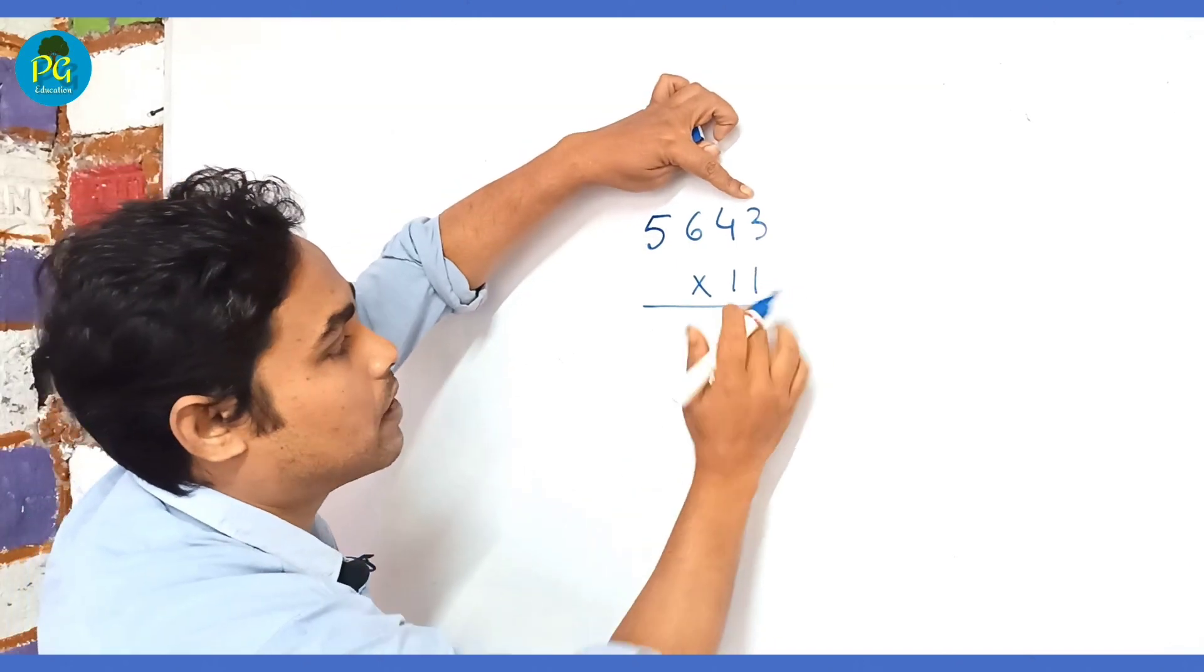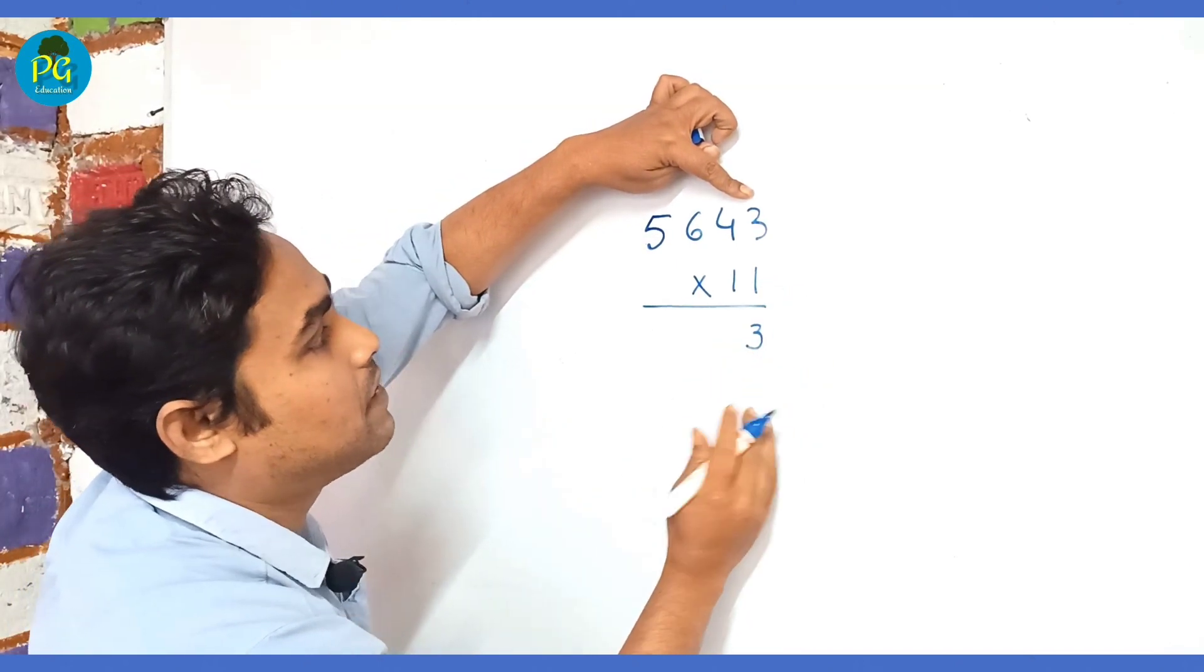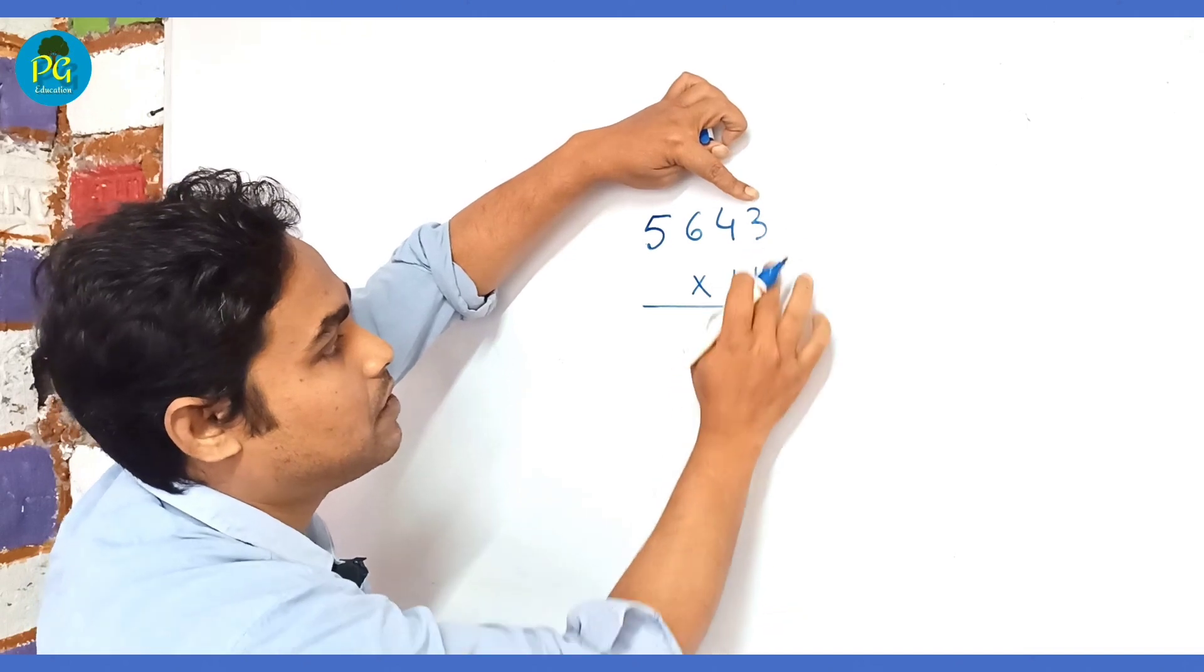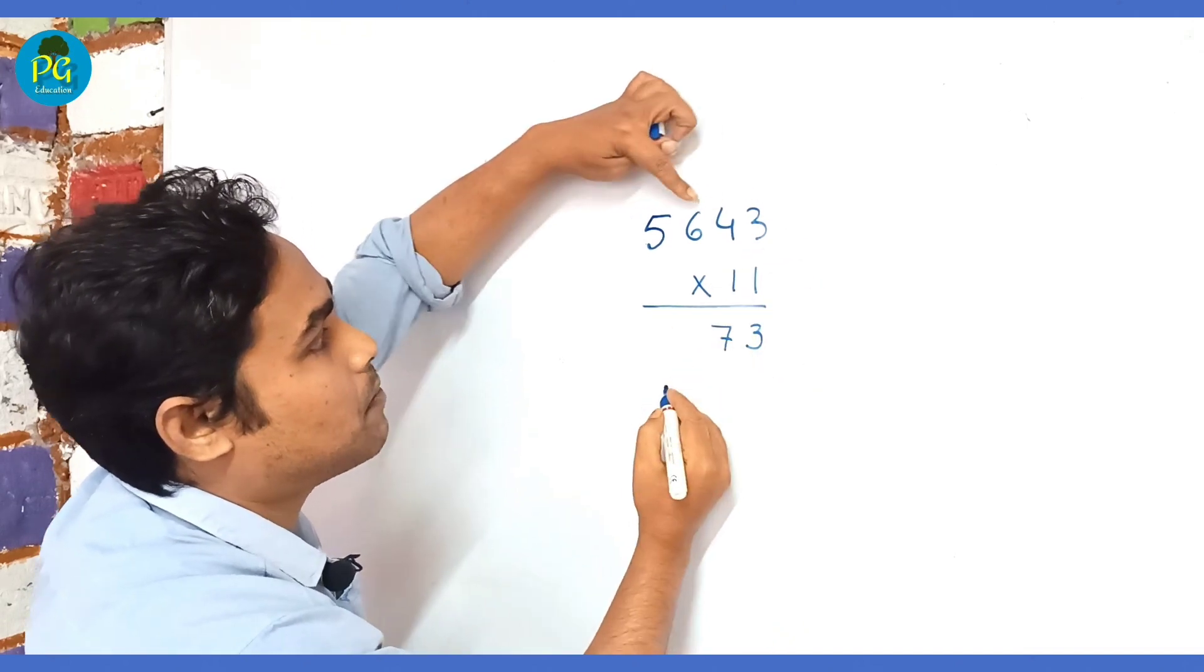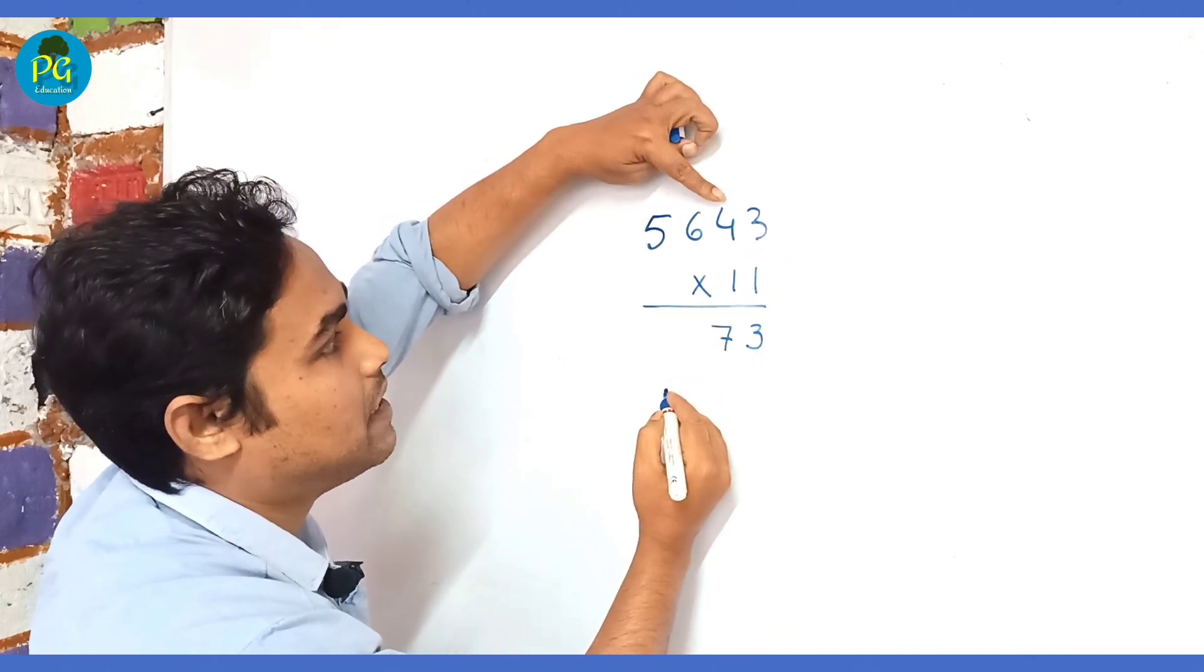we have to multiply 3 into 1, that's 3. Then we will take the sum of 4 and 3, 4 plus 3 is 7, 7 into 1 is 7. Then sum of 6 plus 4, 6 plus 4 is 10, 10 into 1 is 10, 0, 1 in hand. Then 5 plus 6 is 11, 11 into 1 is 11 plus 1 is 12, 2, 1 in hand.